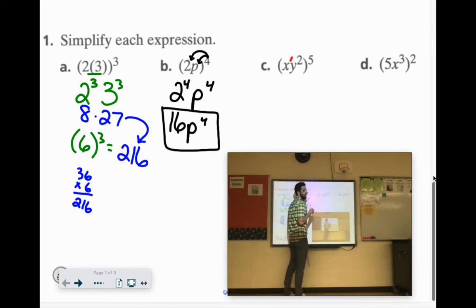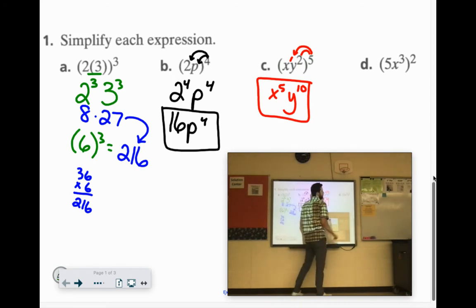Remember, everything has its own exponent. So this will be x to the 5th, and y to the 10th. Last one, we'll have 5 to the 2nd power, and x to the 6th power. 5 to the 2nd power is 25.